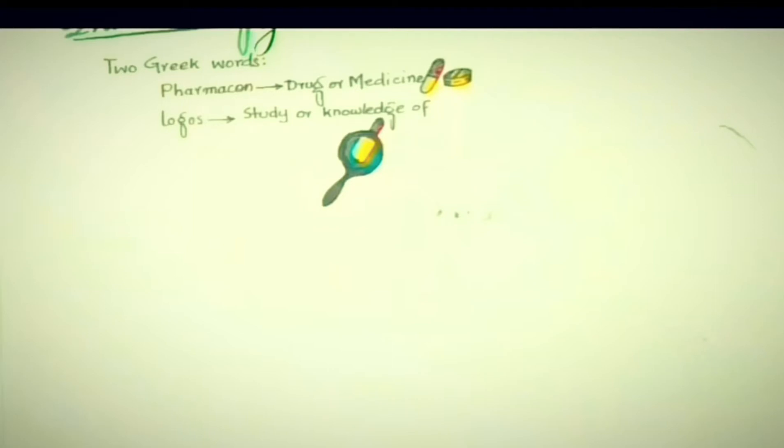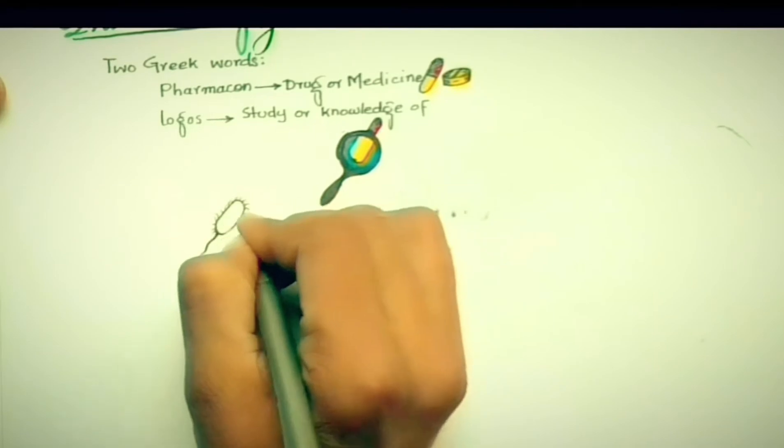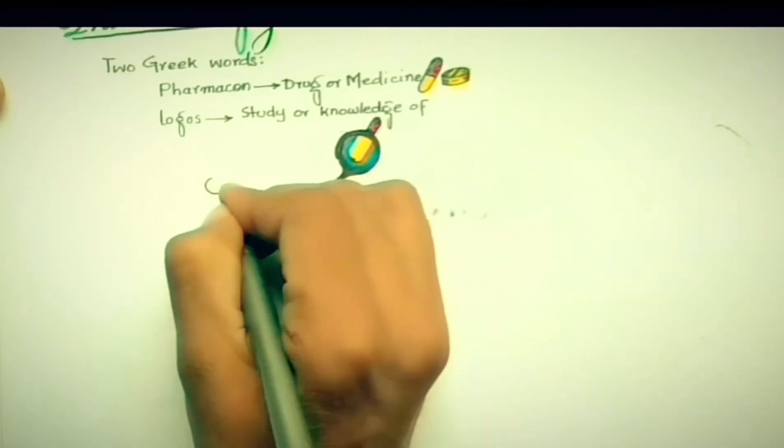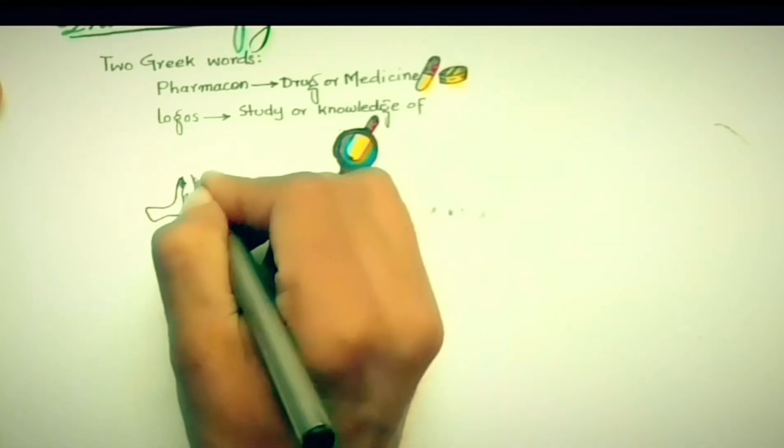Pharmacology is the science or study of substances which are used to prevent, diagnose, or treat a disease. For example, vaccines used for prevention of viral infections, and dimenhydrinate used for motion sickness or vomiting due to traveling.